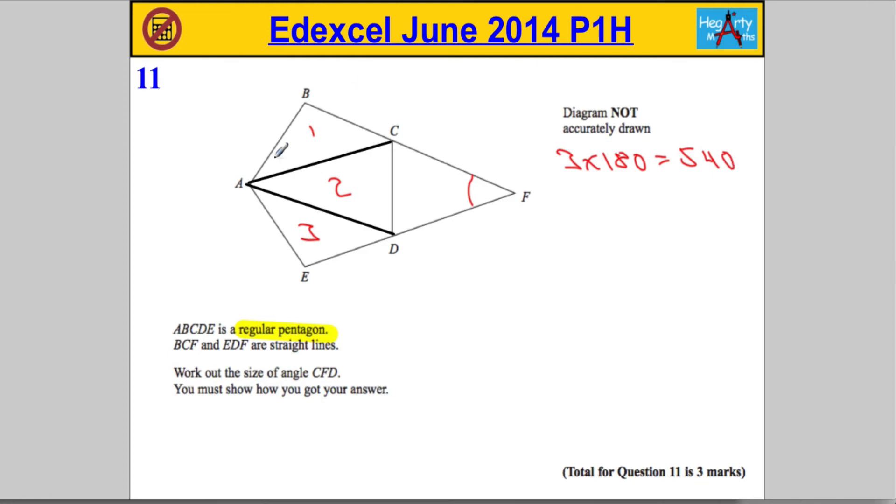Now that I know that there's 540 degrees in the whole shape, I want to work out what each angle is worth. I'm going to take these lines away now. Let's get them out of the way. 540 degrees in the whole shape. 5 angles, meaning to get one angle, I'm going to have to divide 540 by 5.